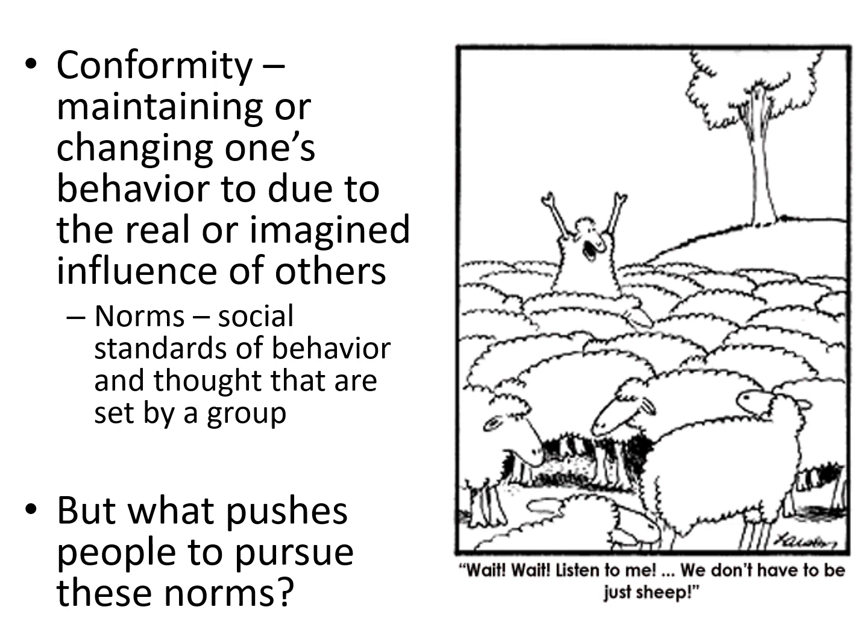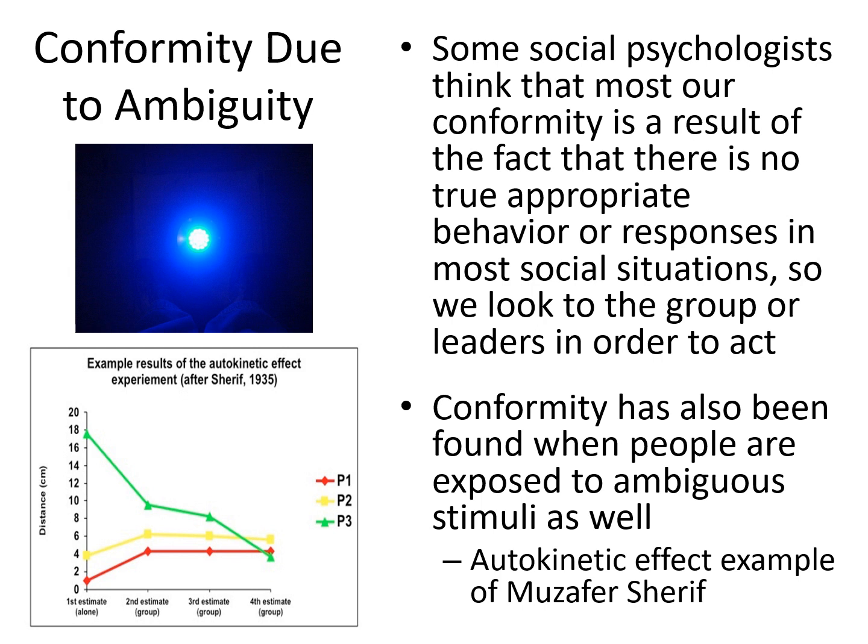Norms can exist in a lot of different forms. The general idea with conformity is that we're all pushed to conform to specific norms, to match our behaviors with others or to do something that's expected of us because we're in some particular group. What pushes us to do those things? This was one of the first questions asked by early social psychologists trying to understand the ways that our behavior was being impacted by a situation. One of the first people to come up with an ingenious approach to understanding conformity was a gentleman named Muzafer Sherif.